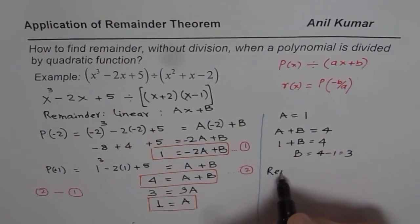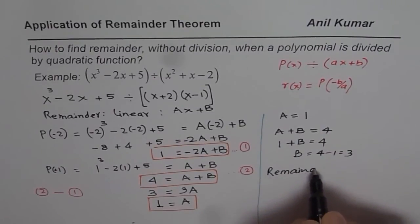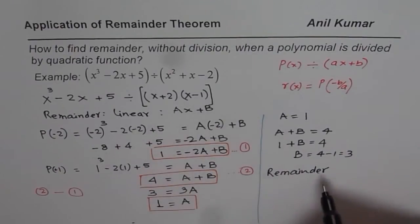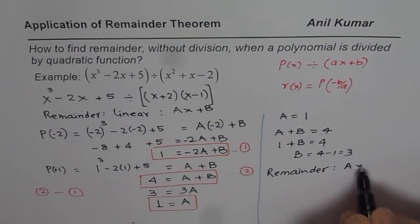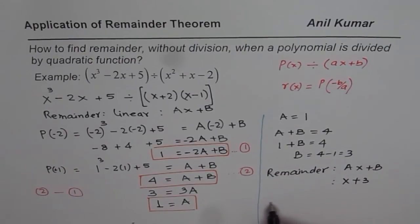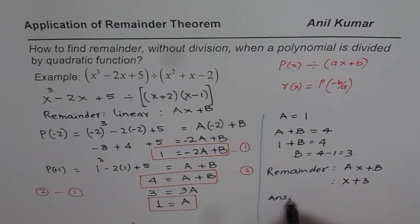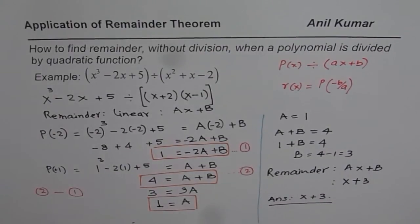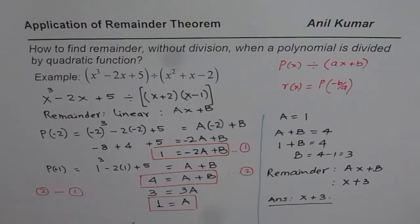Since we know what A and B are, we can say the remainder is AX plus B. A is 1, B is 3, and therefore the remainder is X plus 3. That is how you could actually solve such a question. I hope that really helps. Thank you, and all the best.